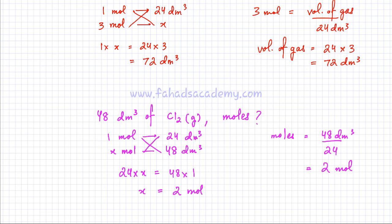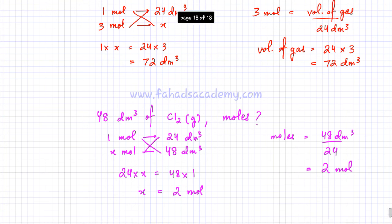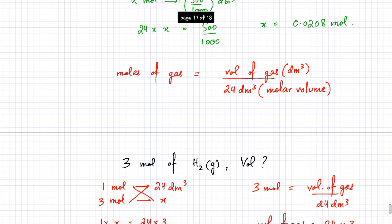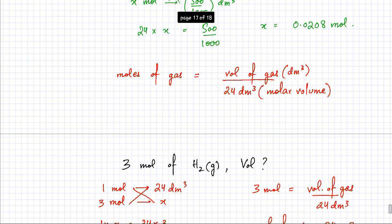From now on I'm going to use formulas for calculating moles or volume of gas. The formula — moles of gas = volume of gas ÷ 24 dm³ — is the one I'll use going forward to calculate either moles of gas or, rearranged, the volume of gas.